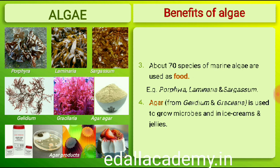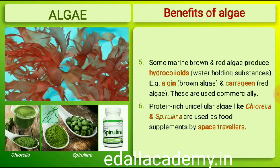Certain marine brown and red algae produce large amounts of hydrocolloids, water-holding substances — for example, algin from brown algae and carrageen from red algae — which are used commercially. Agar, one of the commercial products obtained from Gelidium and Gracilaria, is used to grow microbes and in preparations of ice creams and jellies. Chlorella, a unicellular alga rich in proteins, is used as a food supplement even by space travelers.